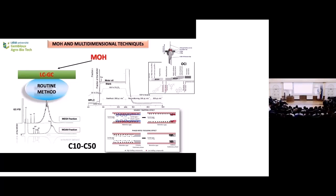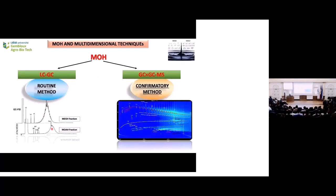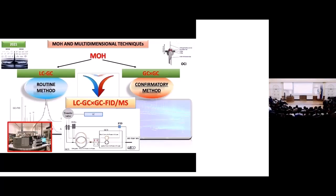The on-column interface came back to the game. We had a brilliant method optimized for routine analysis of mineral oil by Biedermann and Grob, using a very wide separation in the LC dimension to separate the MOSH and the MOAH from the bulk of the matrix. It's evident that we do not have the separation power needed to understand what is behind this unresolved complex mixture that we call hump in jargon. GC-GC came into play. We start to work on the coupling of the routine method with the confirmatory method in a unique platform, completely automated, having the first separation in LC, transferring through an on-column interface into two parallel GC-by-GC, one connected with FID and the other connected to MS.